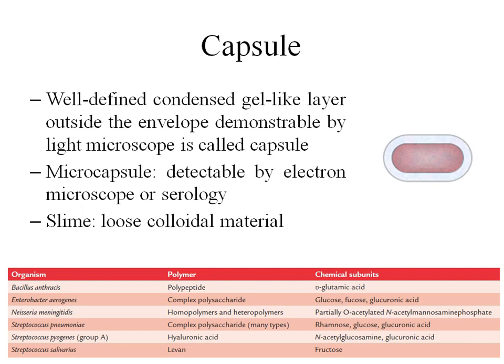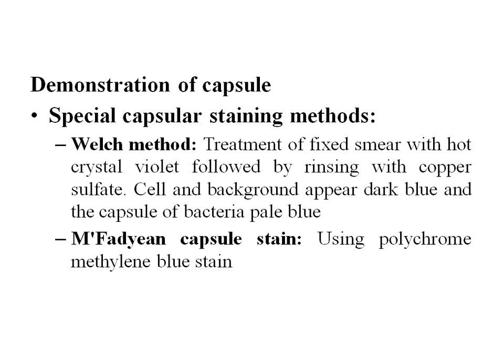If the capsule is very loose, it's called the slime layer of the bacteria. Various bacteria produce different types of capsules, and on the table I have shown the chemical composition. For example, Bacillus anthracis has a capsule made up of D-glutamic acid. Likewise, we have various different organisms producing different types of capsules which are chemically different in their composition.